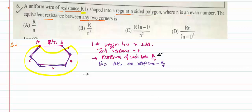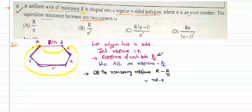The remaining resistance is the total resistance r minus the resistance of one side r/n, which gives r − r/n = r(n−1)/n. I have just taken r as a common factor. So the upper part has resistance r/n and the entire lower remaining part has resistance r(n−1)/n.